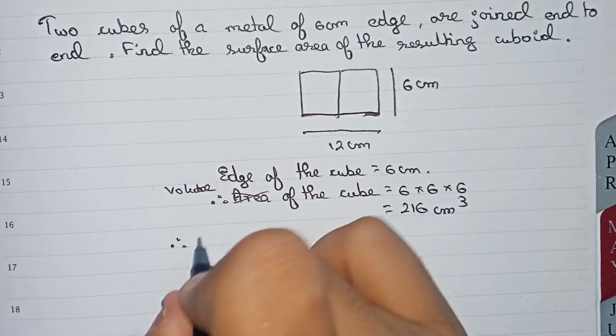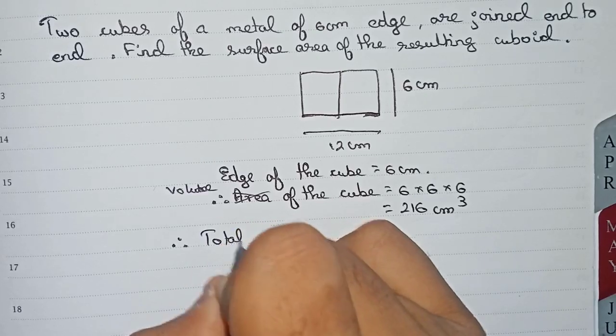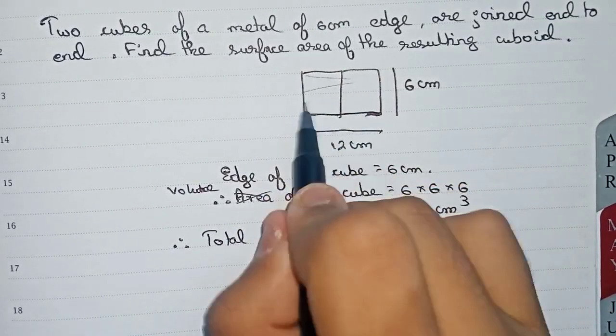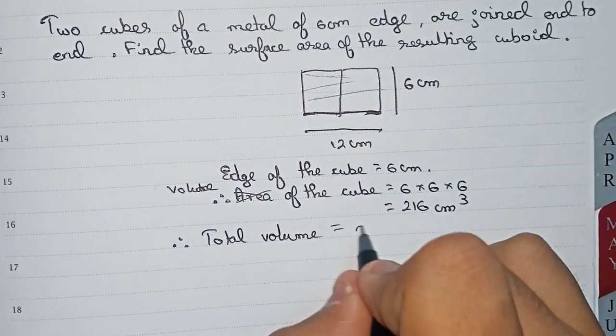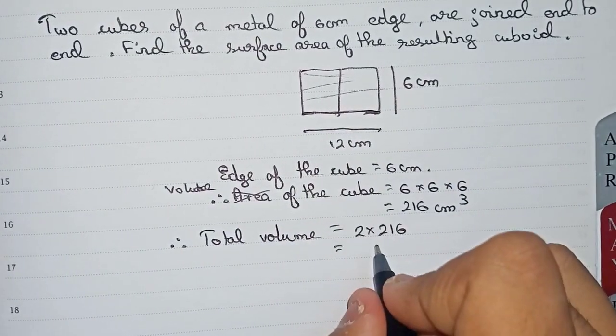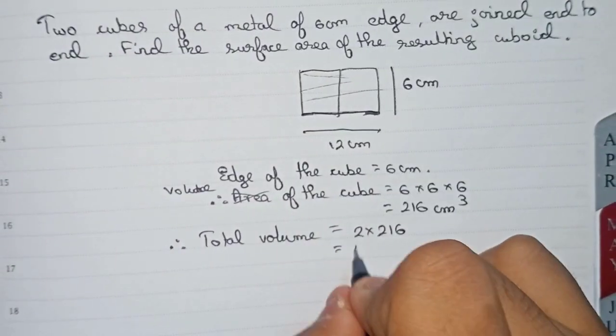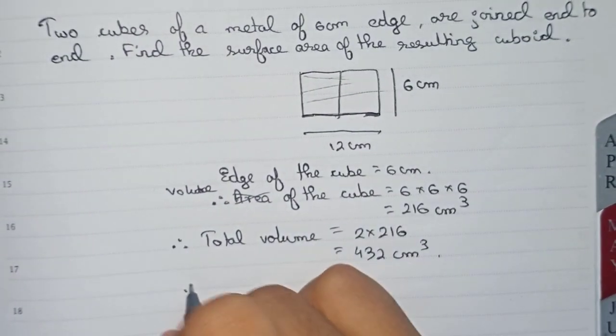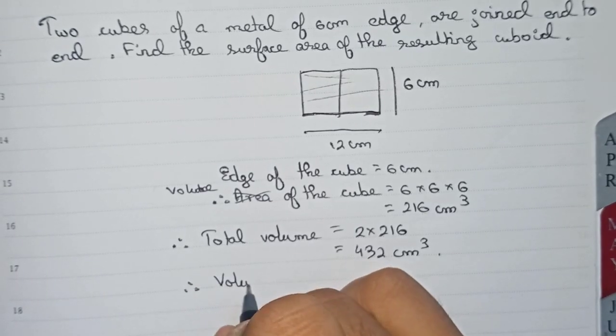Therefore, total volume equals the volume of both the cubes. So 2 into 216, that will equal 432 centimeter cube. Therefore, the volume of the cuboid is equal to 432 centimeter cube.